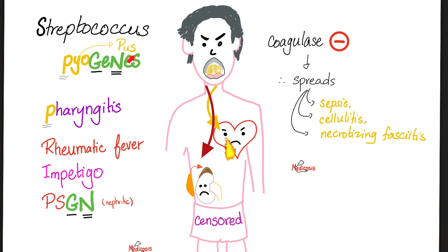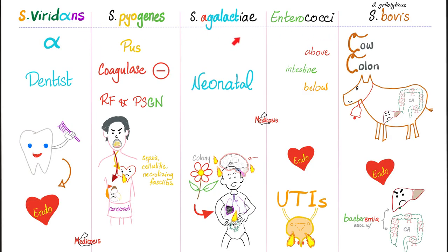The immunological diseases caused by Streptococcus pyogenes: we have rheumatic fever and post-streptococcal acute glomerulonephritis. We talked about the diseases caused by different types of streptococci in the last video. For instance, Streptococcus mutans (the dentist) — I got some dental work done and because I had a weak valve, I developed endocarditis.